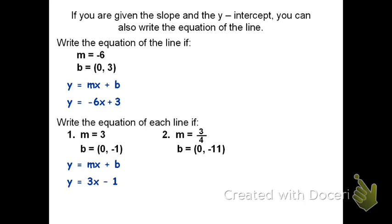In the second equation, the slope is three-fourths and the y-intercept is zero comma negative 11. Substituting the values in m and b, I get y equals three-fourths x minus 11. Pretty easy.